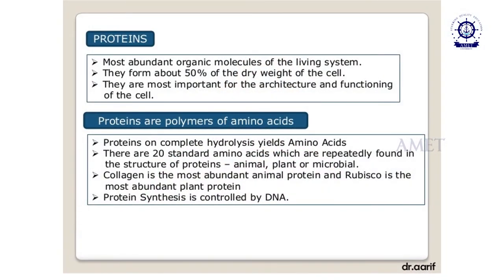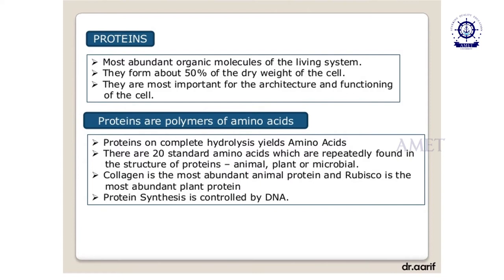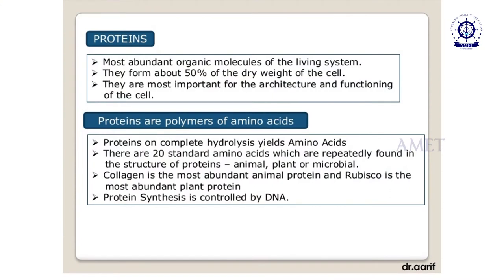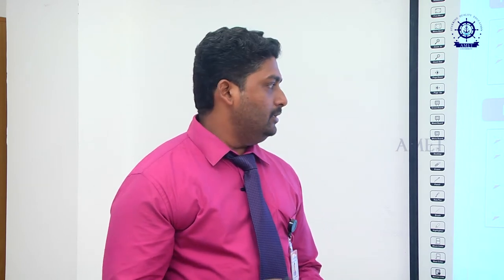Proteins play an important role in our day-to-day life. They are called the building blocks of cells and are the most abundant organic molecules in any living system. They form about 50% of the dry weight of the cell and are most important for the architecture and functioning of the cell, giving a definite shape and perfection to the body. Proteins are polymers of amino acids; complete hydrolysis of proteins yields amino acids. There are 20 standard amino acids repeatedly found in protein structures.